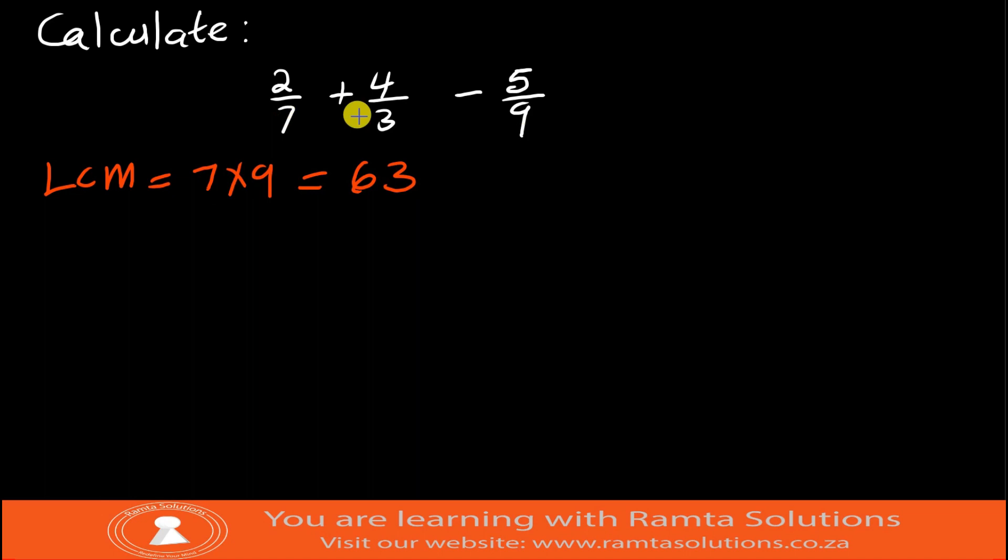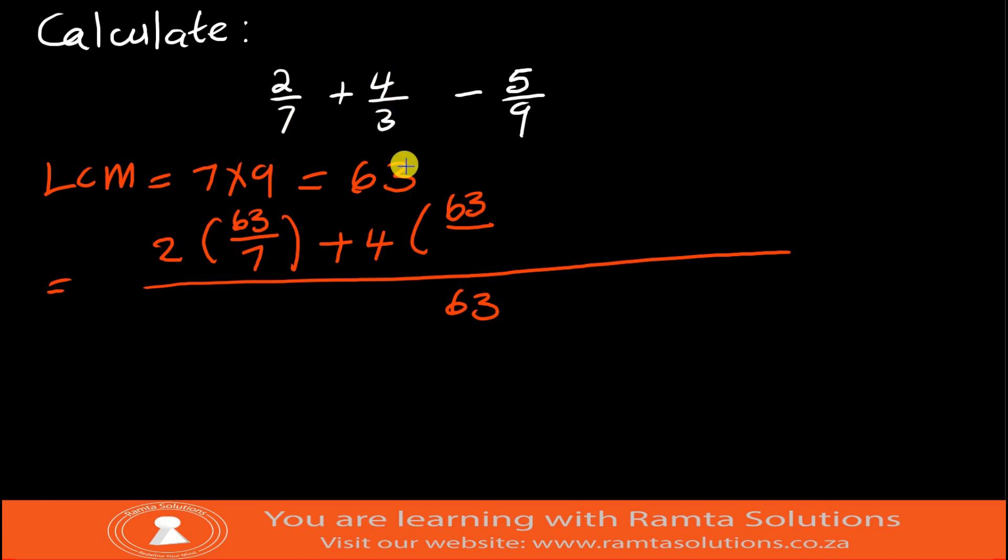To simplify this we can therefore say we have everything over 63. So we'll say 2 into our lowest common multiple 63 over what is the denominator with 2 as a numerator - it was 7. Plus 4, LCM was 63, and what was the denominator of 4? It was 3.